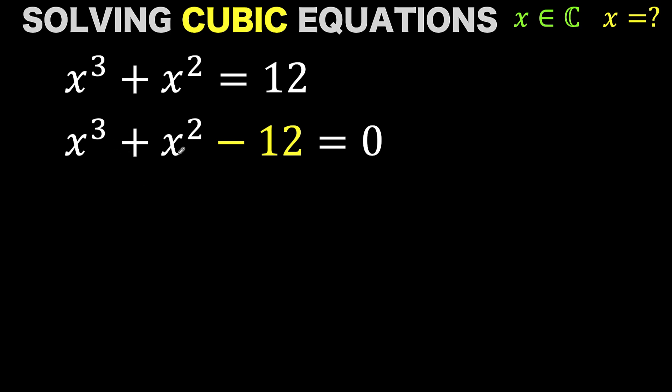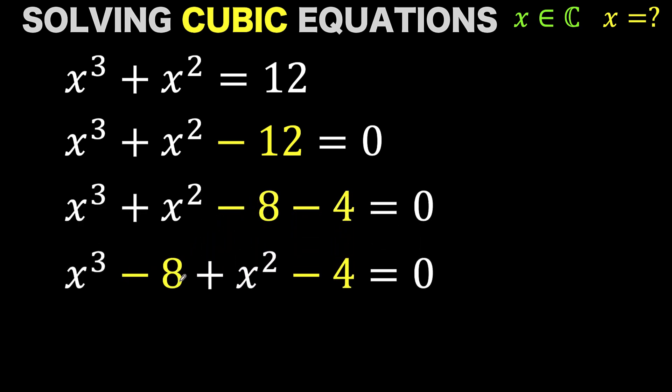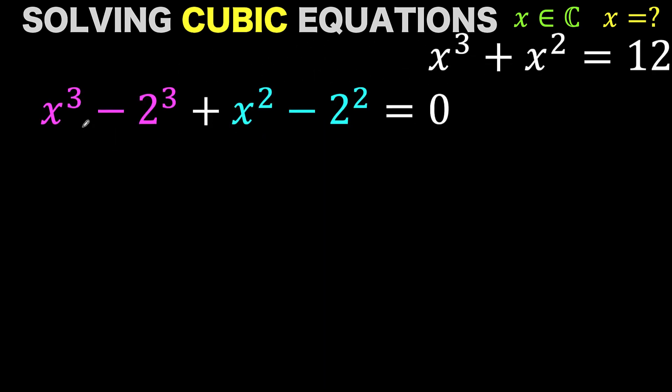We have here cube, we have here squared. If we can split this 12 such that one is expressed in terms of exponent 3 and the other is in terms of exponent 2, then we can apply the difference of two cubes and the difference of two squares. So let's implement that plan. We write -12 as -8 - 4. Then let's rearrange the order of the terms. Now we know that 8 is 2³ and 4 is 2². Then notice now that we have here difference of two cubes and we have here difference of two squares.